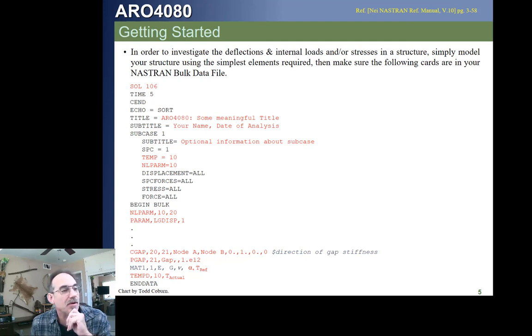And this is just letting us know that while this gap goes from node A, whatever ID is the first one, to node B, it has a direction. The stiffness is going to be in the direction that's shown here on the CGAP card. On the PGAP, that gives us the stiffness. And this happens to be doing a gap with a thermal analysis, but that doesn't have to be there. Okay.